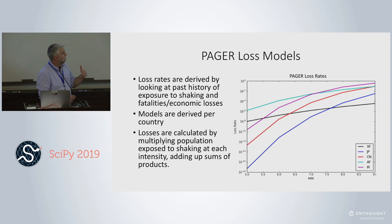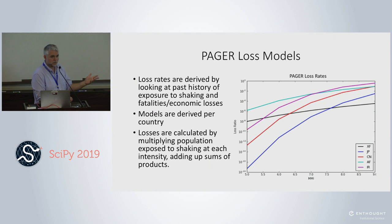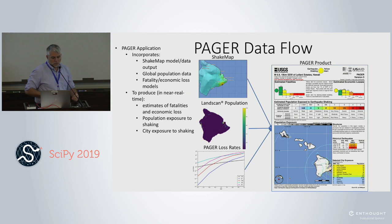ShakeMap feeds into PAGER, which is based on loss models created by looking at the past history of population exposure to shaking — how many people felt MMI 5 or MMI 6 in a given earthquake. These models are derived for each country or groups of countries. You have a loss rate at a given MMI, and a gridded global population dataset. The calculation is simple: take the population in a given cell, find the intensity in that cell, multiply them together, and sum across all cells to get total fatalities. Economic loss is similar, with additional factors for GDP.